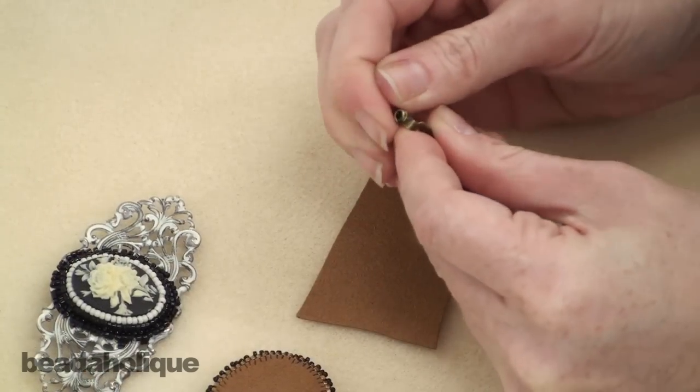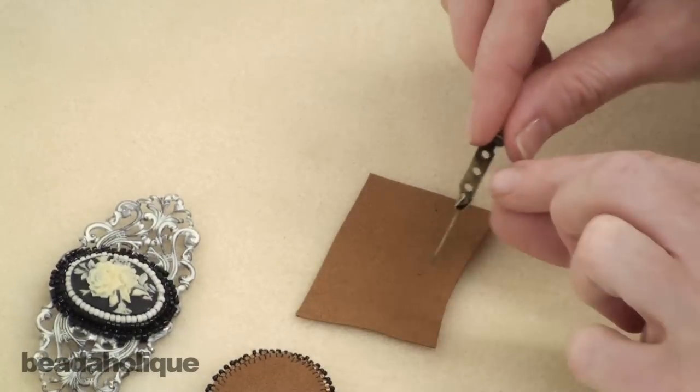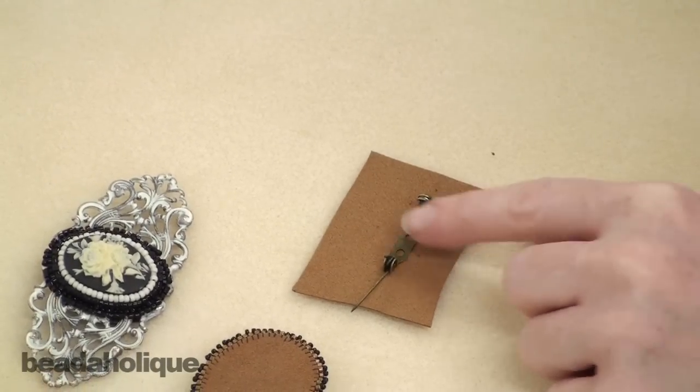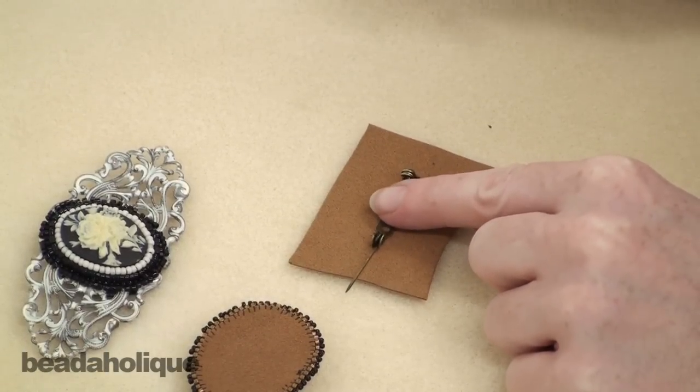We're going to open up the pin back and then lay it where we want it to be on our piece of suede. Now we're just going to lower it down ever so slightly.